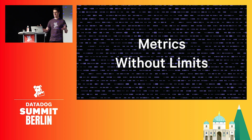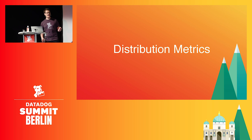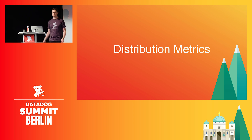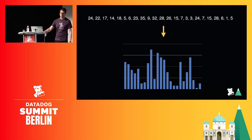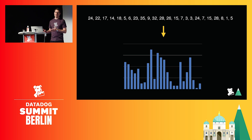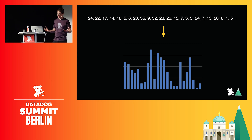And this is why I'm excited to talk about metrics without limits. You have already been using distribution metrics — distribution metrics is the first feature release of metrics without limits. These are high-density, high-velocity metrics that describe individual transactions.